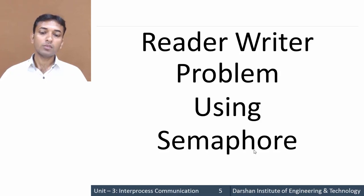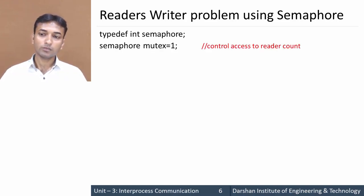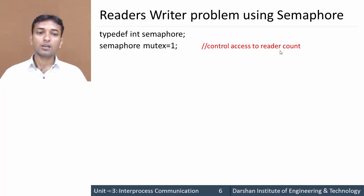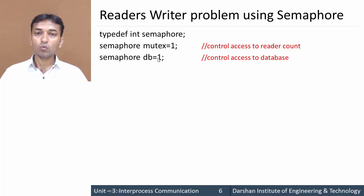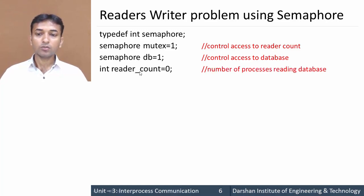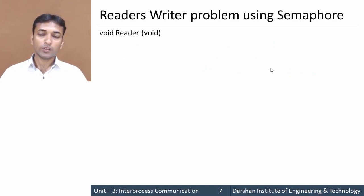Now let us move to the reader-writer problem using semaphore. Here is the algorithm. First: typedef int semaphore — we are declaring a special semaphore variable type. Then semaphore mutex = 1 — this mutex variable is used to control access to reader_count, which keeps track of the number of processes accessing the database in reading mode. Then semaphore db = 1 — this variable controls access to the database. Finally, int reader_count = 0.